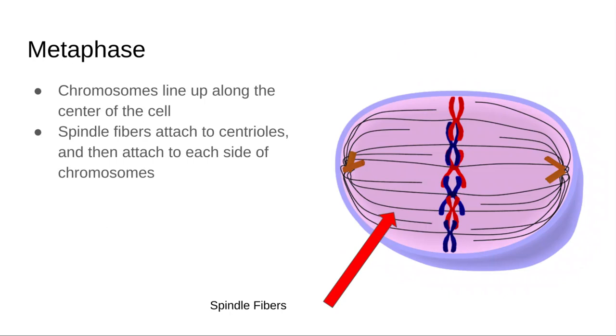In metaphase, these chromosomes that were inside of the nucleus—the nuclear envelope disintegrates—and these chromosomes line up along the center of the cell. The centrioles on each side of the cell attach spindle fibers, which are the line-looking things that the red arrow is pointing to. They attach them to the chromosomes and these spindle fibers will do something in the next stage, which is anaphase.